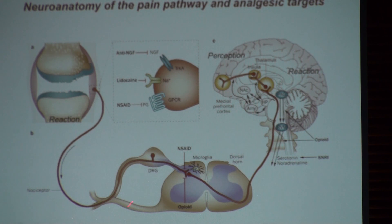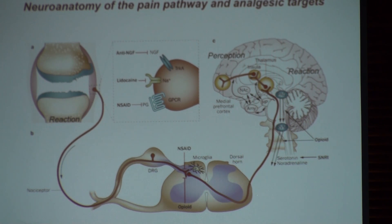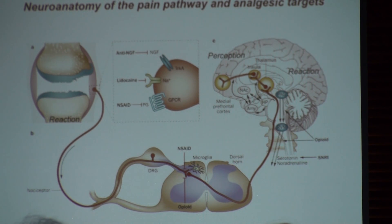This is nerve transmission. So if you can block the nerve transmission, you can also prevent pain. And that's how local anesthetics work. Local anesthetics basically block the transmission of pain at this area.